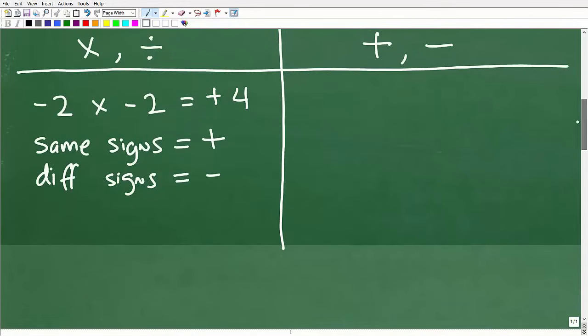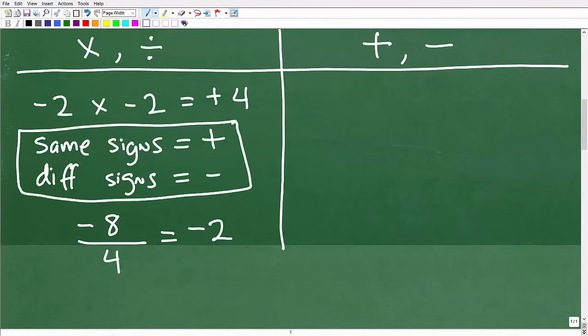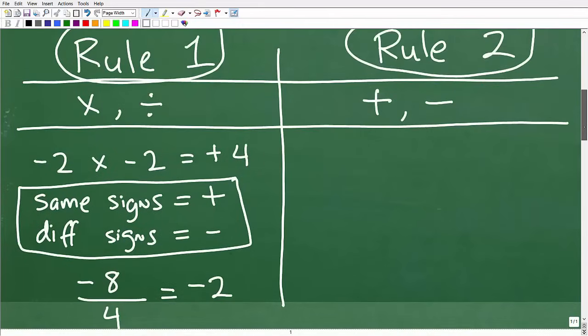So let's take a look at something like this: negative eight divided by a positive four. So here this is negative, this is positive. When we do this division, our answer is obviously going to be two. But what is the sign? The signs are different, so my answer is going to be negative.